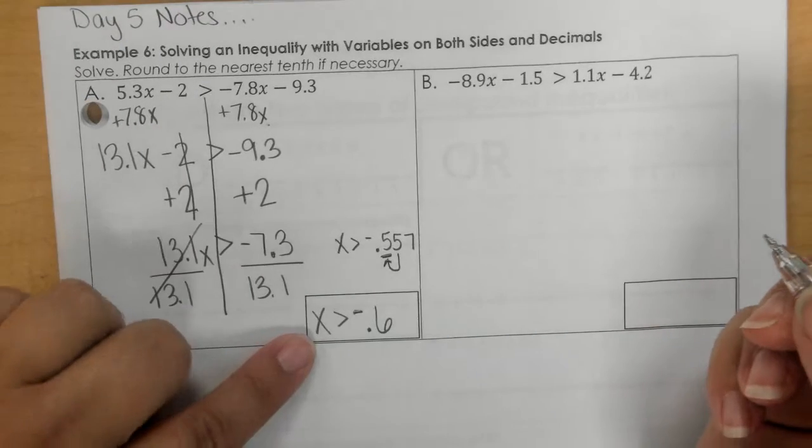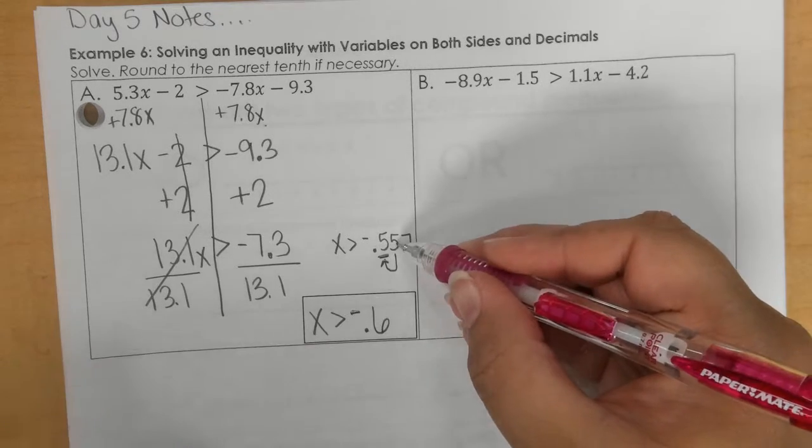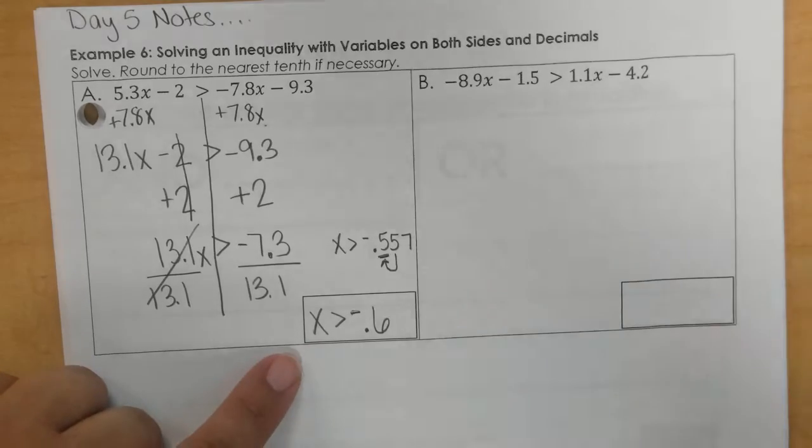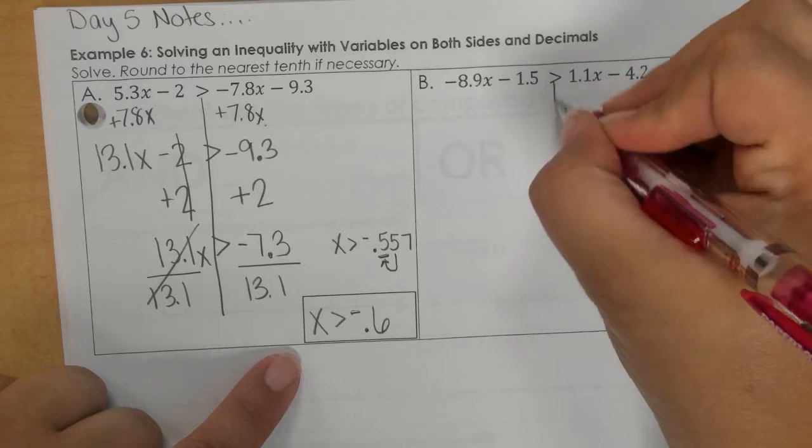So I have negative 0.6. So that's my rounded answer. That's more of an accurate answer, but this is my rounded answer. Last one for day 5 notes.